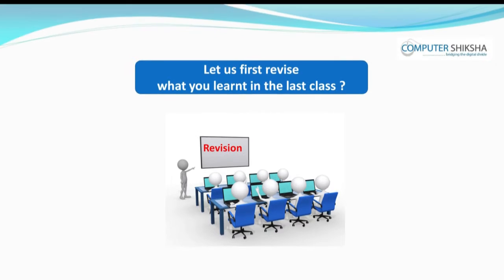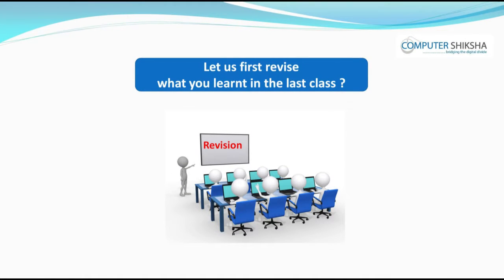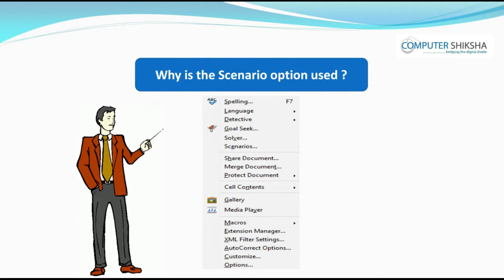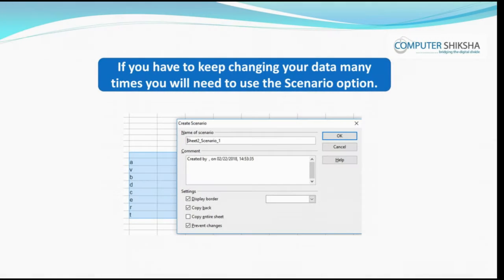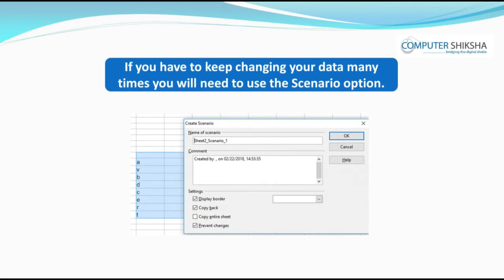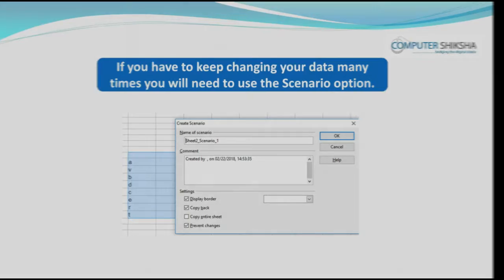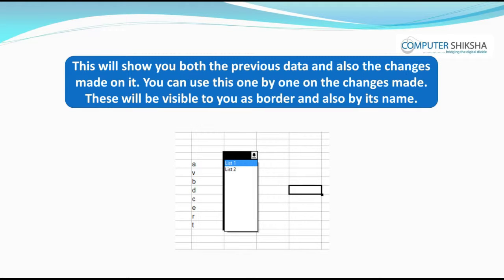Let us first revise what you learnt in the last class. Why is the scenario option used? If you have to keep changing your data many times, you will need to use the scenario option. This will show you both the previous data and also the changes made on it. You can use this one by one on the changes made.